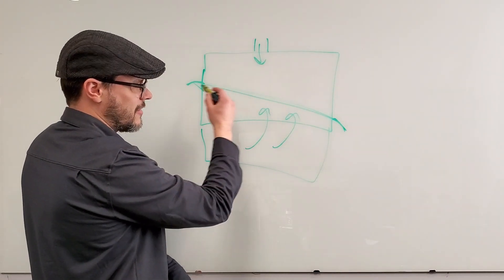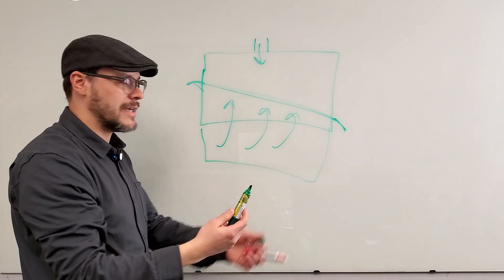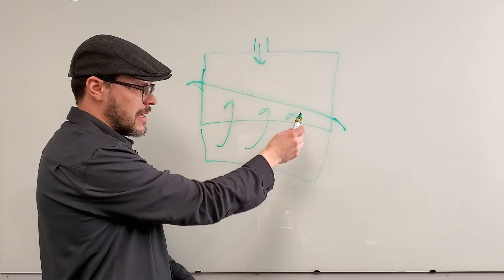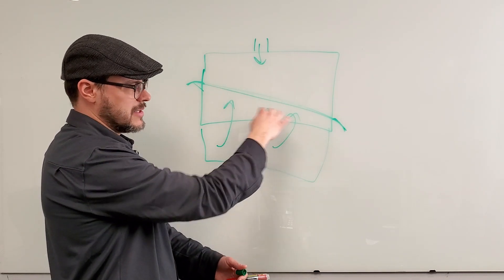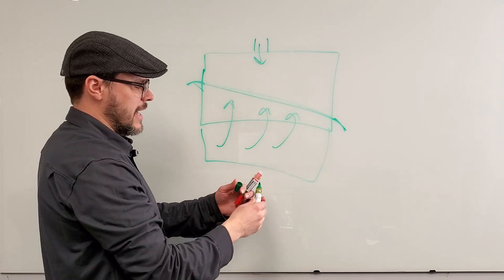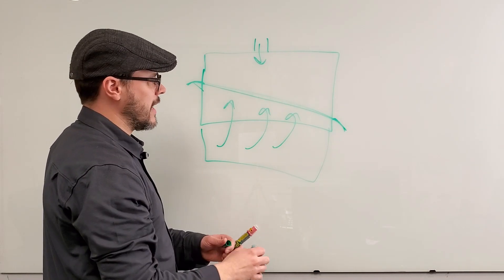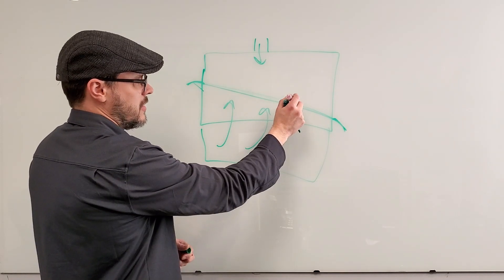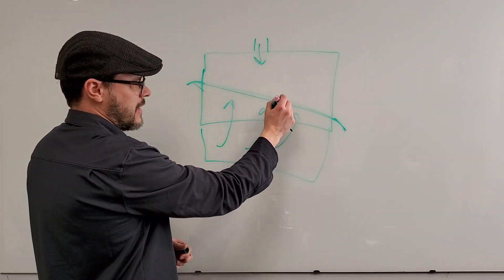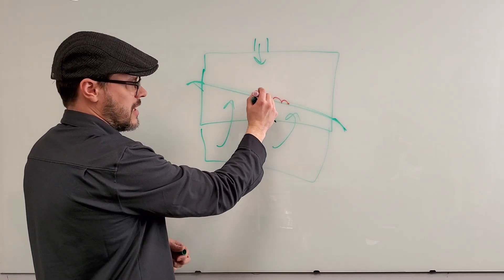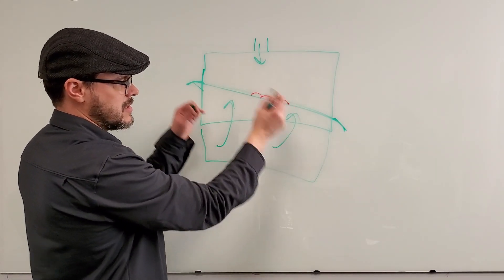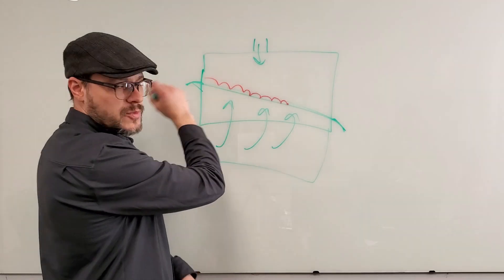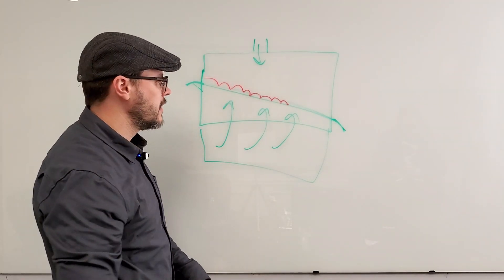They call it a fluidized bed, and it's the same principle with water. The water tables shake, and what ends up happening is all your little particles when they hit the deck want to bounce upward because the deck is shaking in an upward motion, so they want to climb up.